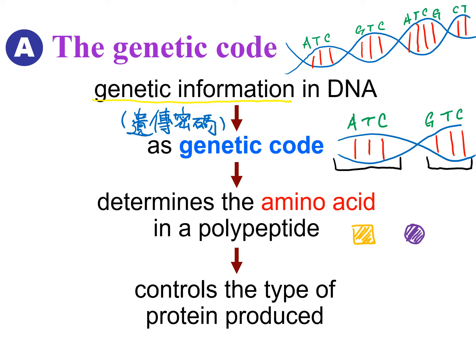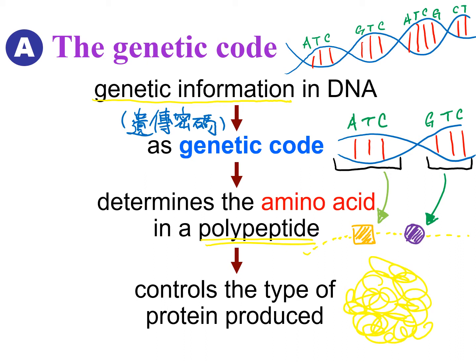This important genetic code, such as ATC, determines a particular amino acid. So it will call for, for example, an amino acid which looks like a square in orange. For GTC, this genetic code, it might call for another amino acid which looks like a circle in purple color. And these amino acids, after being made, they will be joined with each other one by one to form a long-chain polypeptide.